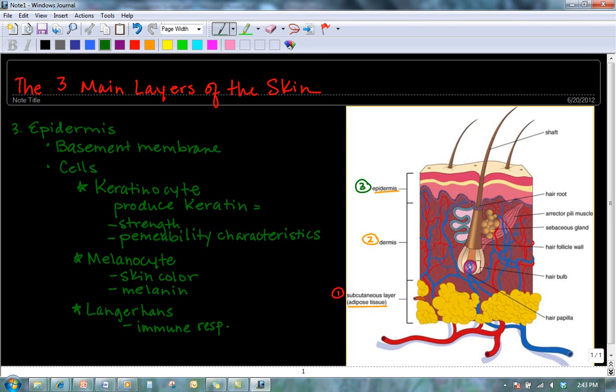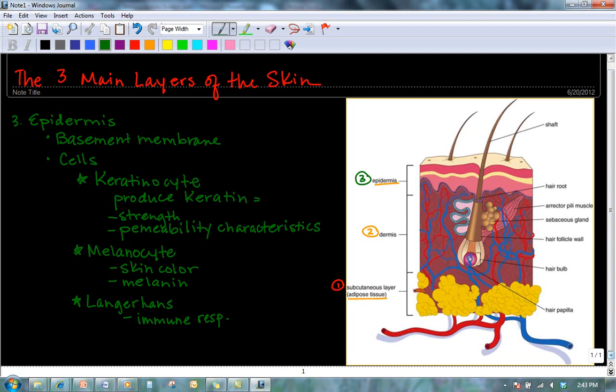Basically, though, the epidermis is layered, and basically the way that it's organized is that in the deepest layer is where the cells undergo mitosis. Then what happens is that the cells are going to rise to the surface of the skin, and as they do, the cells die.